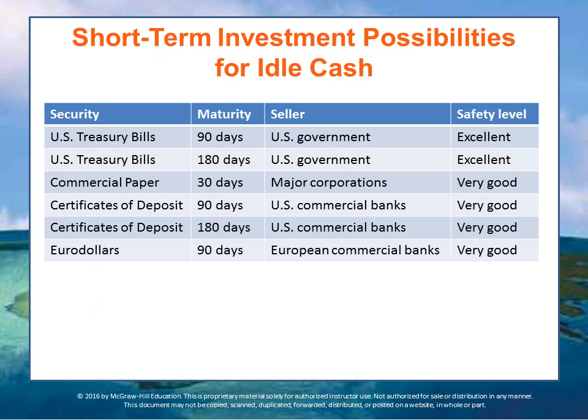This table summarizes a number of different types of marketable securities used by businesses, giving the maturity and the safety of each. While all of the listed securities are very low risk, U.S. government securities are the safest. Interest rates of all types of securities in this table declined dramatically during the period from June 2006 to 2014. In fact, you may never see interest rates this low again during your lifetime.